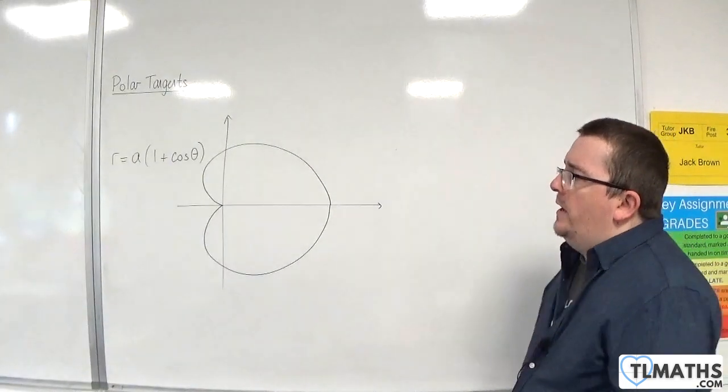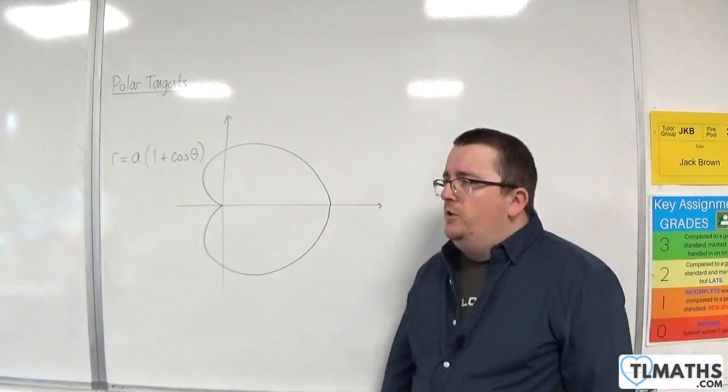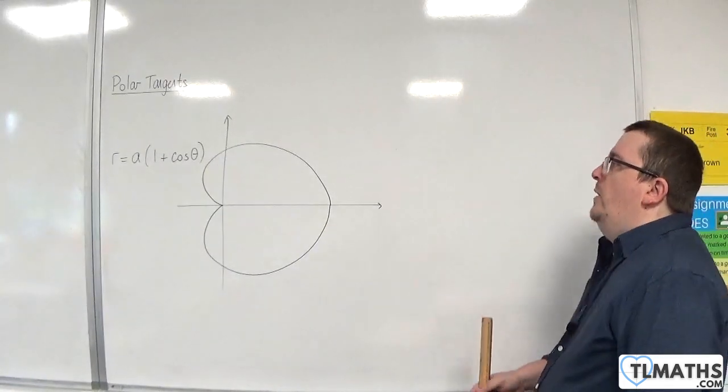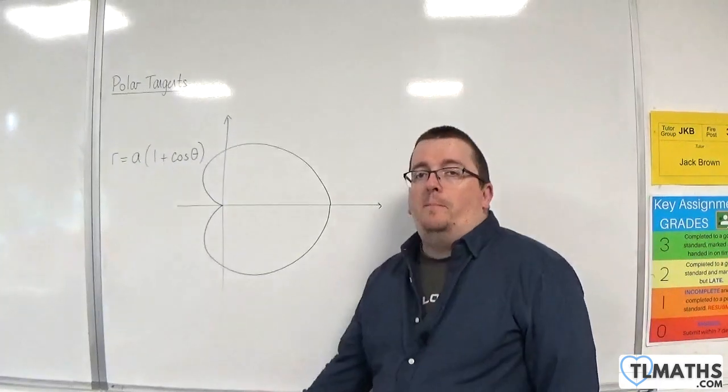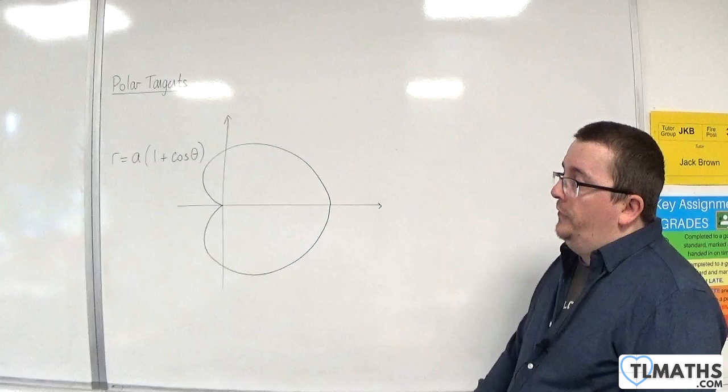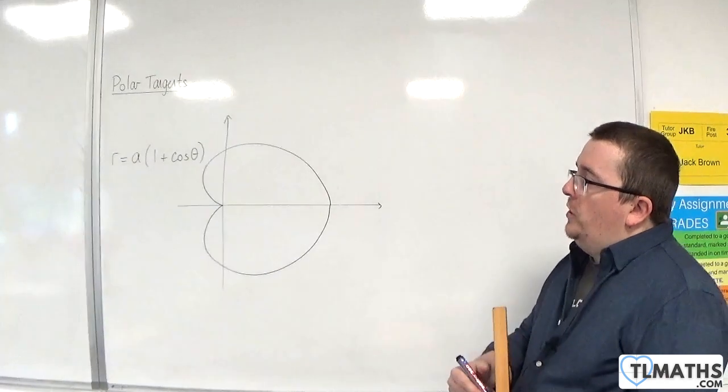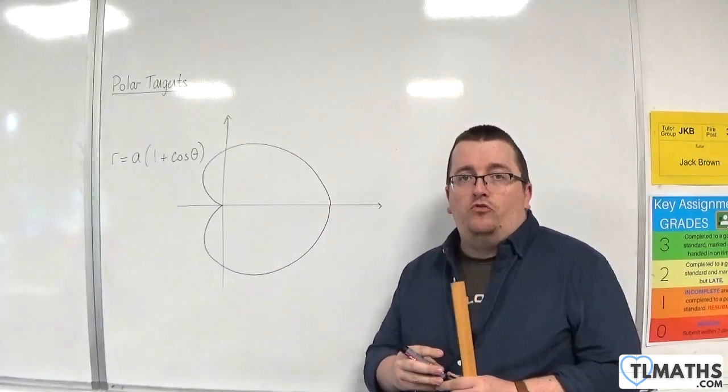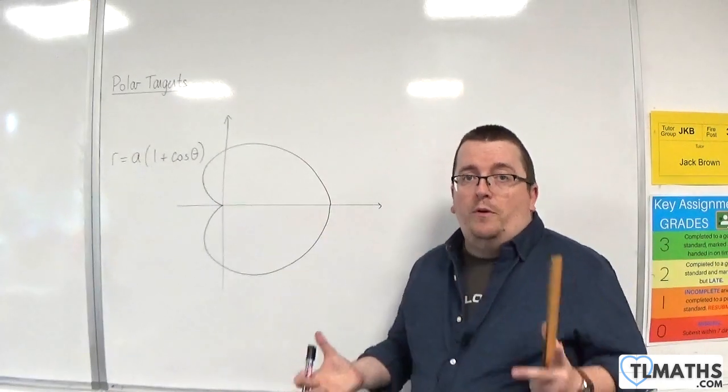And you might be wondering, how are we going to do that? Well, if we just focus our attention on finding those that are parallel to the initial line first, essentially they are going to be stationary points. We're going to be finding stationary points to the curve. So in order to do that, we're going to need dy by dx to be equal to 0.